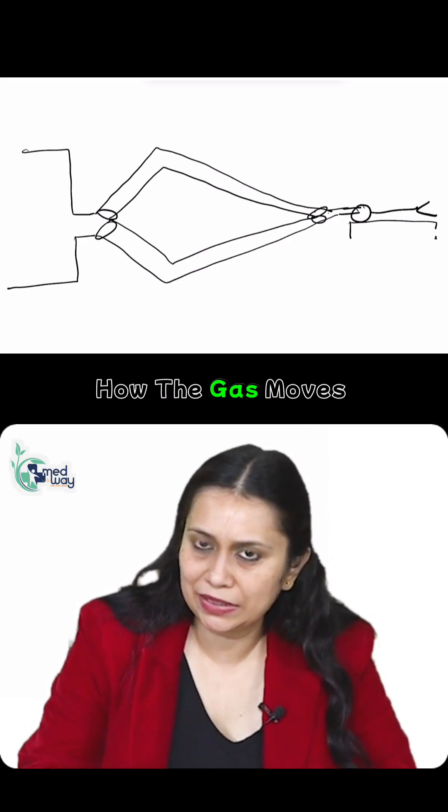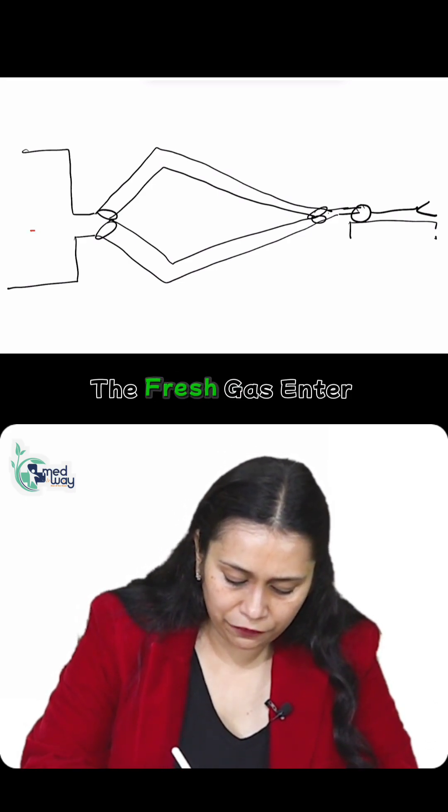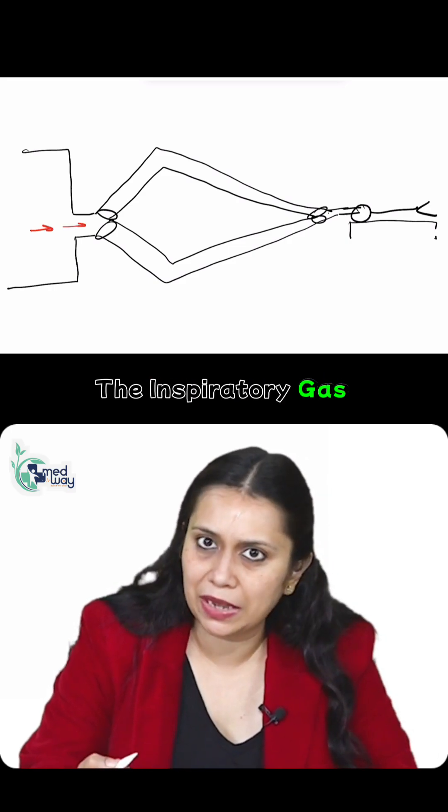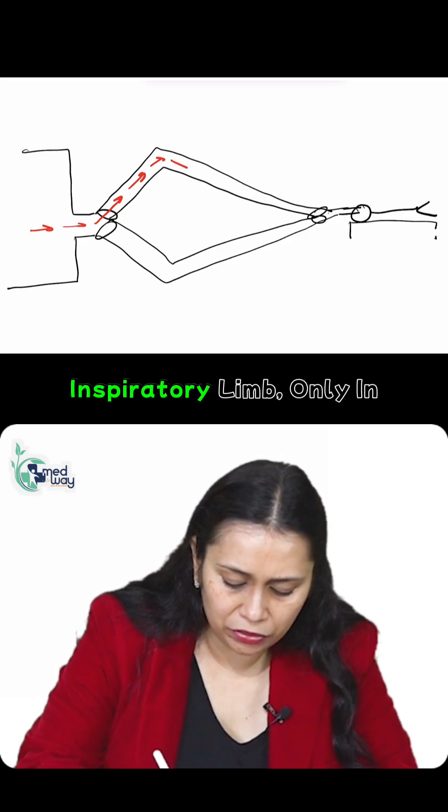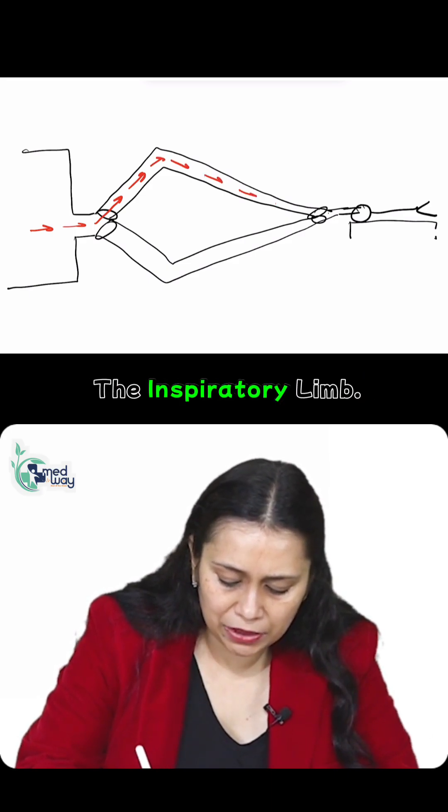Okay, so now let's see how the gas moves. From the machine, the fresh gas enters. It enters through this one-way valve only in the inspiratory limb.